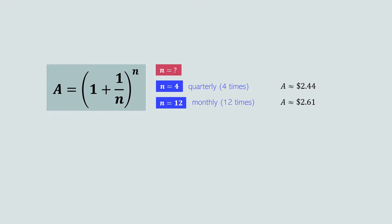Now let's ask another question: what if interest was compounded daily? If interest is compounded daily, that means it is compounded 365 times per year. Therefore N equals 365 and A equals $2.715.